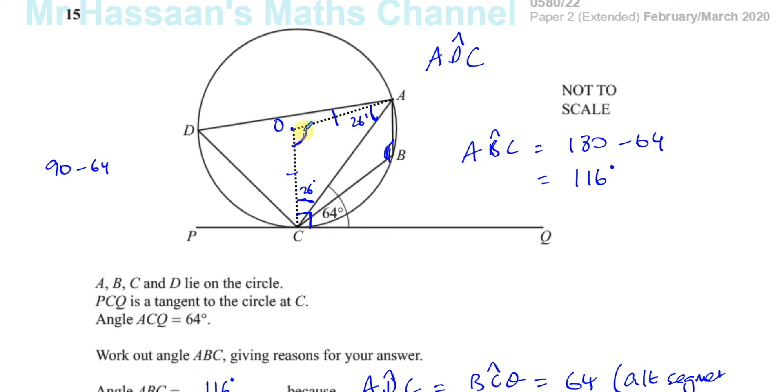And if those two are 26 degrees, then this must be 180 minus 2 times 26, which is 180 minus 52, which is going to be 128. Okay, so this is 128, so we worked out that this is 128.